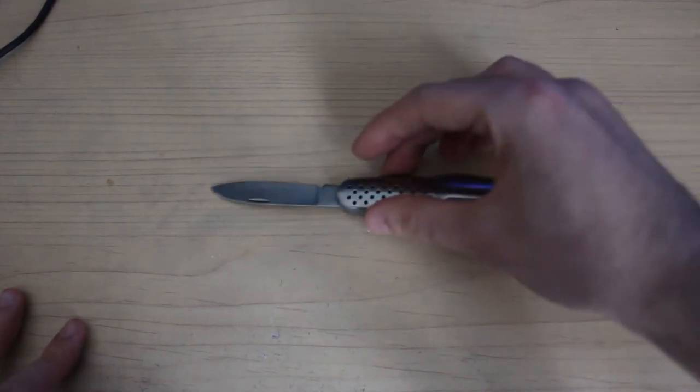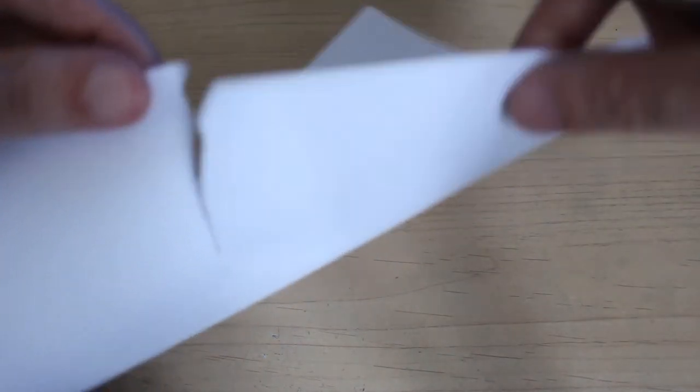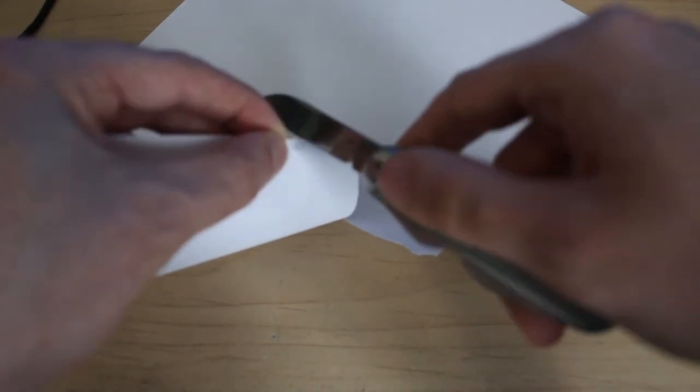Of course, being a blade I need to do a cut test. I'm gonna do the so-called paper test. I've got a piece of paper here and I'm gonna see if this cuts it. I'm gonna go ahead and say no. This does not cut paper. The blade is way too dull.